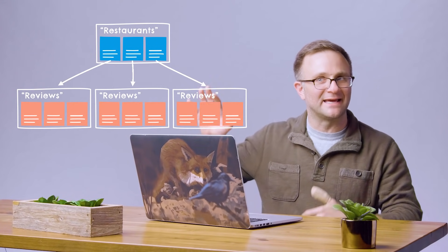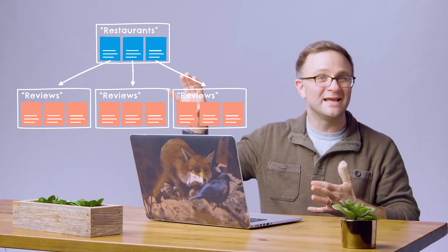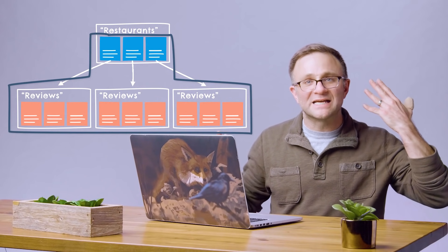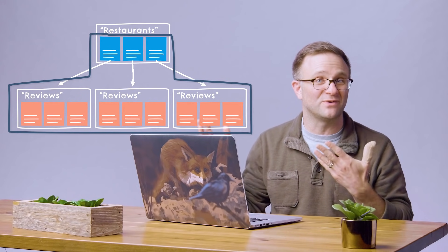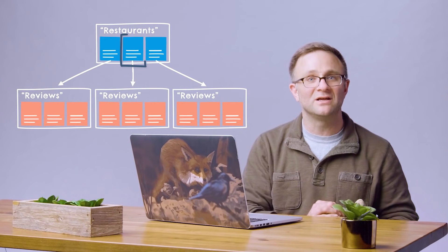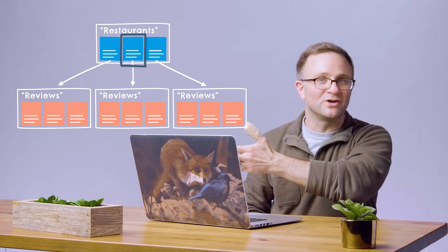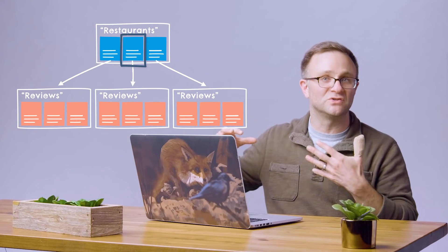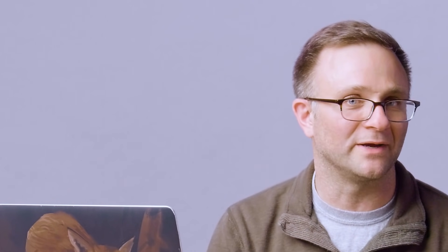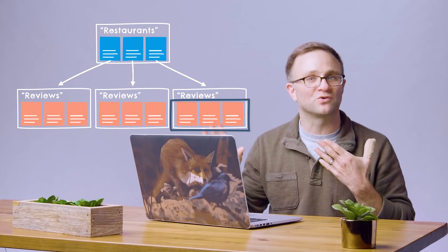Incidentally, if you're coming from the Firebase Realtime Database, this kind of deep nested structure might be giving you heart palpitations, because in the Realtime Database world, when you retrieve some element in the tree, you automatically retrieve everything below it. That would mean downloading potentially hundreds of restaurant reviews any time you want to grab a couple dozen restaurant documents. But in Cloud Firestore, queries are shallow by default, which means when you grab documents within a collection, you only grab those documents — not documents in any sub-collections. So you can grab your 20 top-rated burrito restaurants and just get those restaurant documents without all the reviews, which makes sense — if you're doing a search for best burrito places, you don't need the individual reviews at that point.